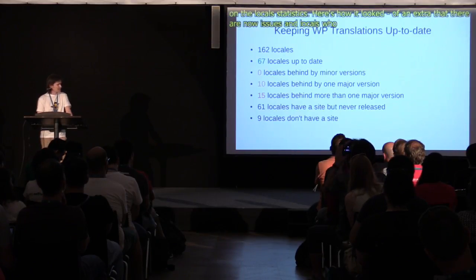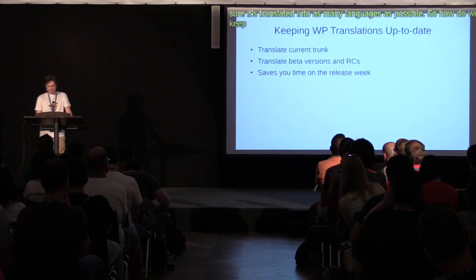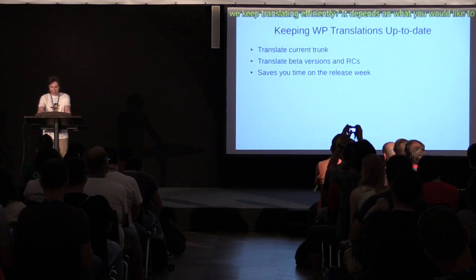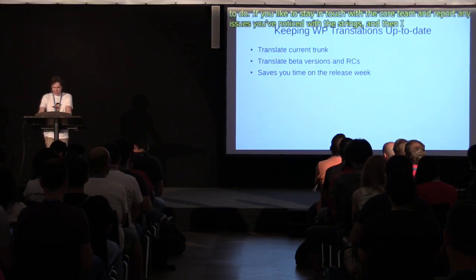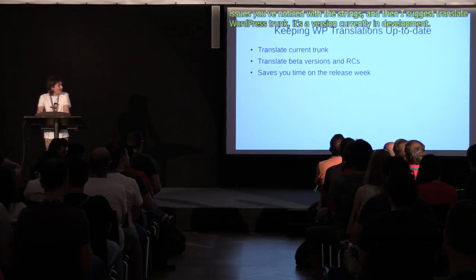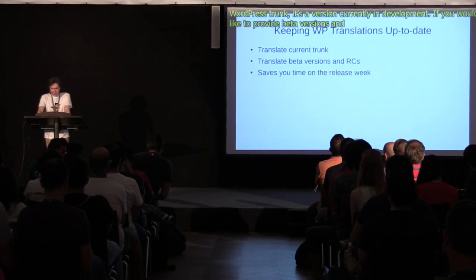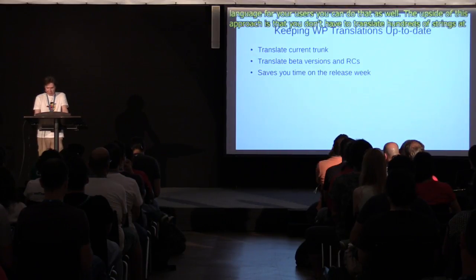We want to make sure that WordPress is translated into as many languages as possible. How do we keep translating efficiently? It depends on what you'd like to do. If you'd like to stay in touch with the core team and report any issues you've noticed with the strings, I'd suggest translating WordPress trunk — that's the version currently in development. If you'd like to provide better beta versions and release candidates in your language, you can do that as well. The upside is that you don't have to translate hundreds of strings at once on release week, but the downside is that it takes about an hour per week and the strings can change later. So if you don't like making too many edits, that's absolutely fine — I'd suggest waiting for a string freeze, which is generally announced a couple of weeks before the release.